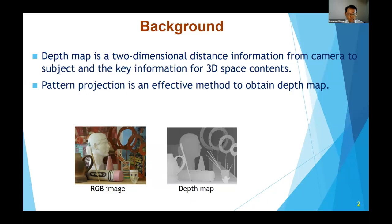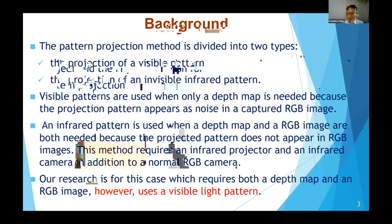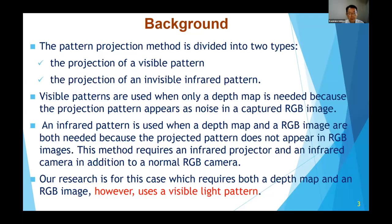There are various ways to obtain the depth map. The pattern projection method is one of the effective methods. It is divided into two types: the projection of a visible pattern and the projection of an invisible infrared pattern. Visible patterns are used when only a depth map is needed, because the projection pattern appears as noise in captured RGB images. An infrared pattern is used when both a depth map and RGB images are needed, because the projection pattern does not appear in RGB images. However, this method requires an infrared projector and infrared camera in addition to a normal RGB camera.